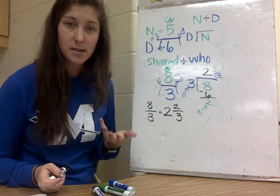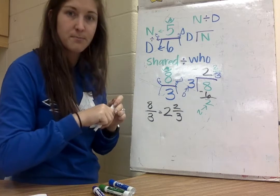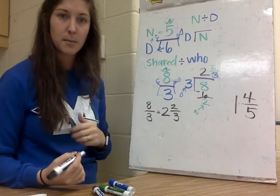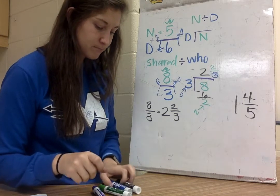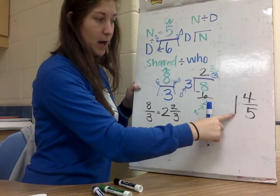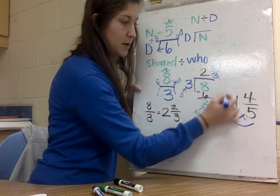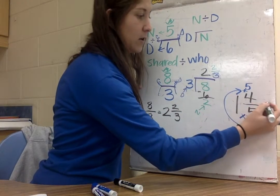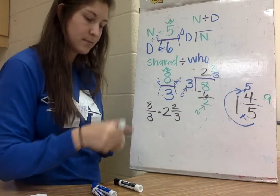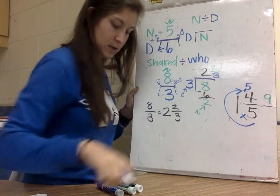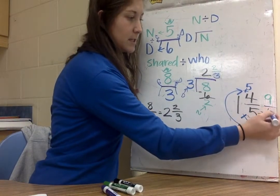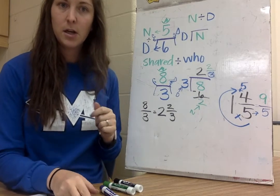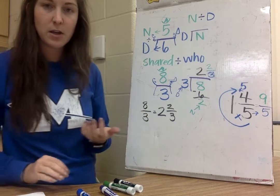You can also take a mixed number and change it into an improper fraction by following a phrase called making the mixed number mad. I take my whole number and my denominator and multiply them. So 1 times 5 is 5. Then I add 5 plus 4, which is 9. My denominator stays the same. So 1 and 4 fifths is the same thing as 9 fifths. Hopefully that gave you a quick refresher about fractions and what we can do with them.